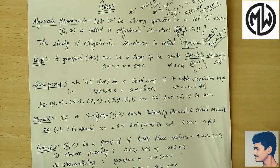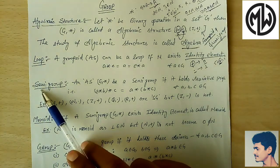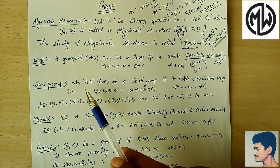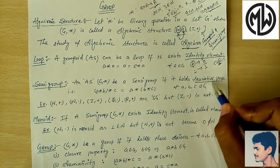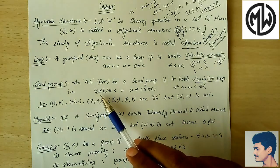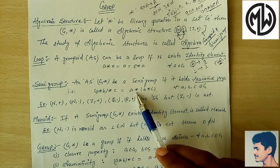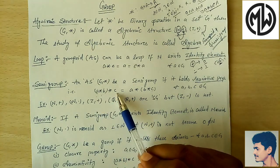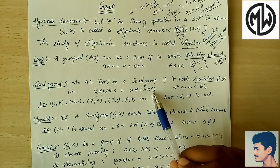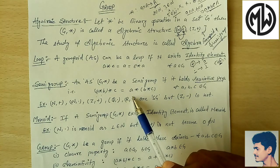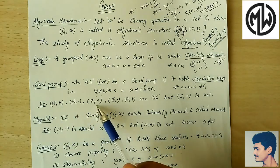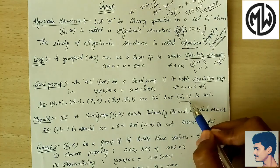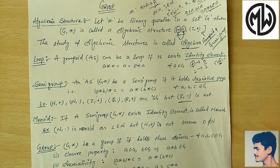Next topic is semi-group. An algebraic structure (G, star) is a semi-group if it holds the associative property. Associative property: (a star b) star c = a star (b star c). If you operate two elements first and then operate the result with the third, the answer will always be the same regardless of grouping. Examples of semi-groups are: (N, +), (N, ·), (Z, +), (Q, ·), (R, +). But (Z, −) is not a semi-group.